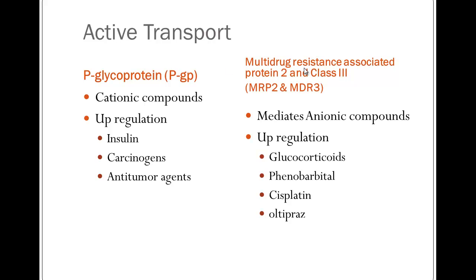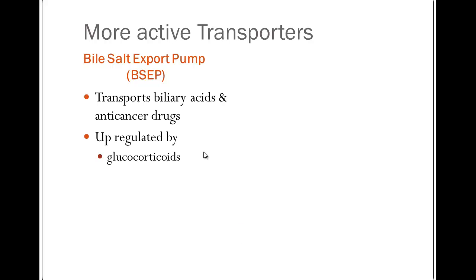Here are some active transport sites to know about. First, P-glycoprotein, which mostly moves cationic compounds and can be upregulated by insulin, carcinogens, and anti-tumor agents. The multi-drug resistance associated proteins 2 and 3 usually mediate anionic compounds and can be upregulated by glucocorticoids, phenobarbital, cisplatin, and others. Then there's the bile salt export pump — BSEP — which transports, surprisingly, biliary acids and some anti-cancer drugs, and is upregulated by glucocorticoids.